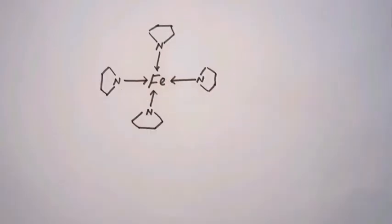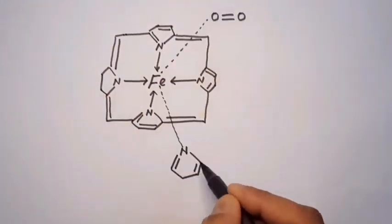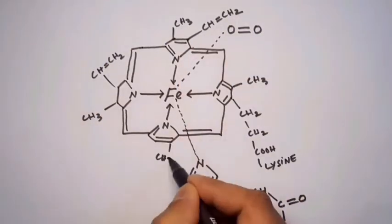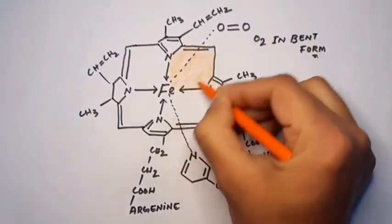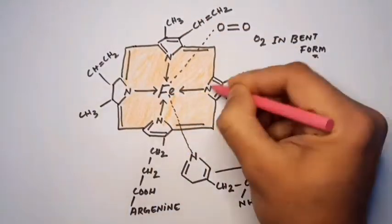Here we are going to draw the quaternary structure of the haemoglobin molecule, a metalloprotein which imparts red color to the blood cells or erythrocytes.